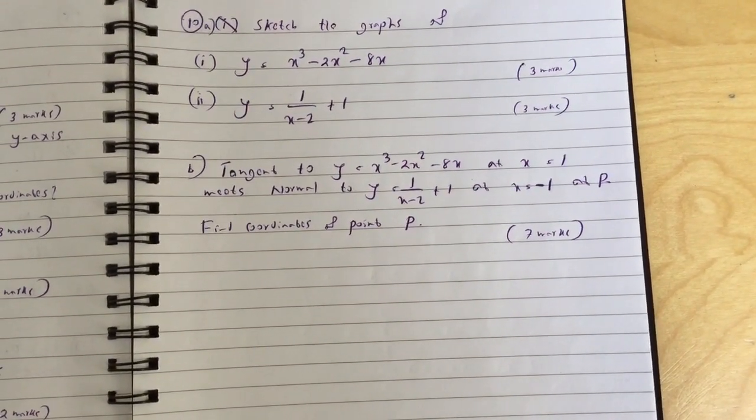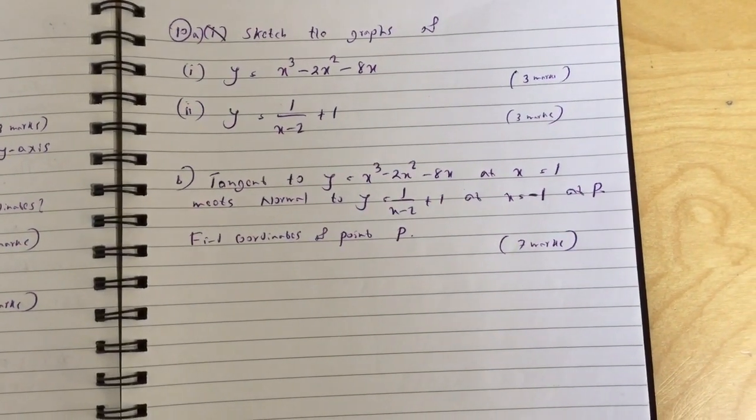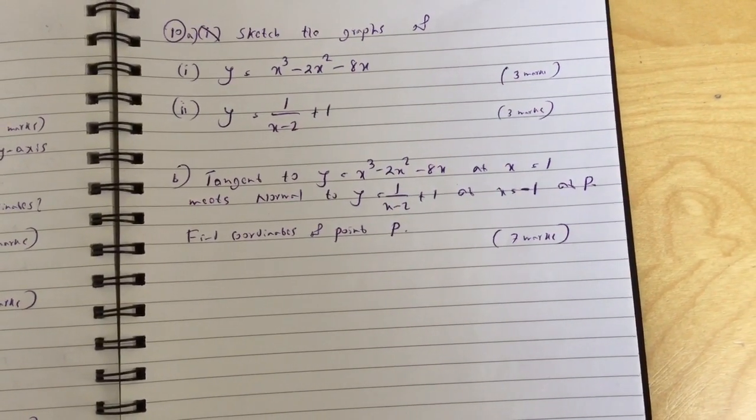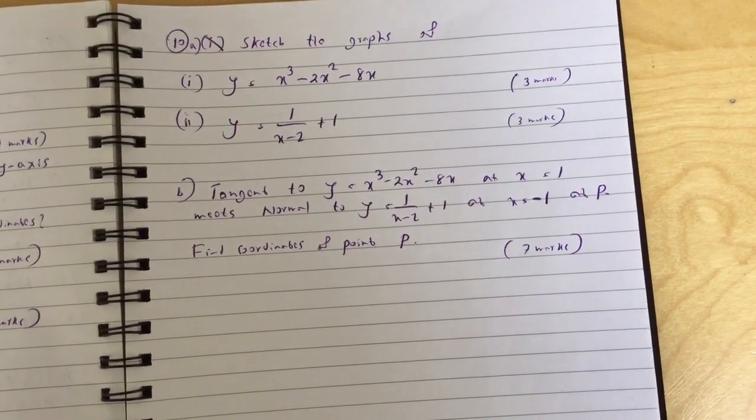Part b: The tangent to y equals x cubed minus 2x squared minus 8x at x equals 1 meets the normal to y equals 1 over (x minus 2) plus 1 at x equals minus 1 at point p. Find the coordinates of point p.